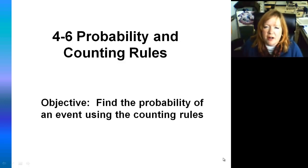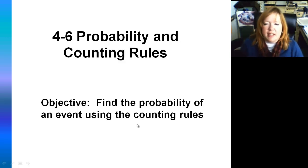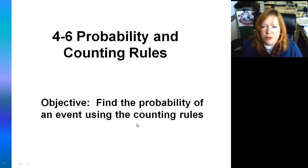Hello statisticians, we are starting the last section of chapter 4, which is the probability and counting rules. You should have pre-printed note sheets to go along with these notes. One thing I want to say is this lesson is why casinos make the money. So we're going to find the probability of an event using the counting rules. Last section you used the counting rules in order to figure out how many possibilities something has.